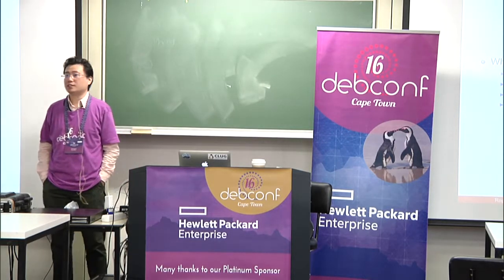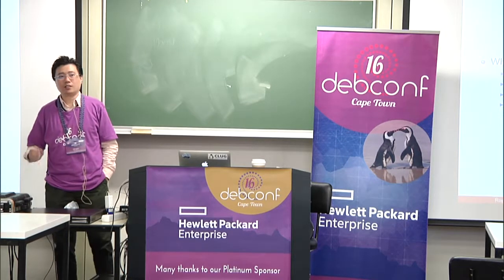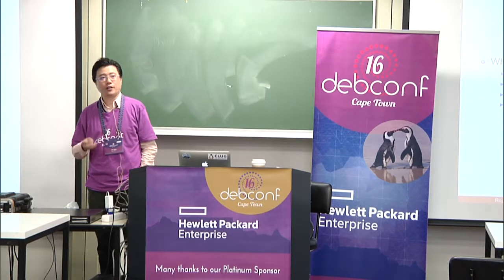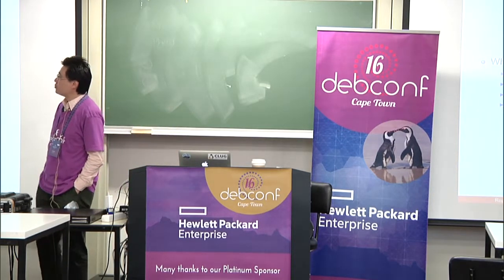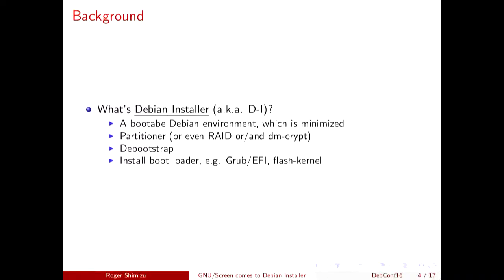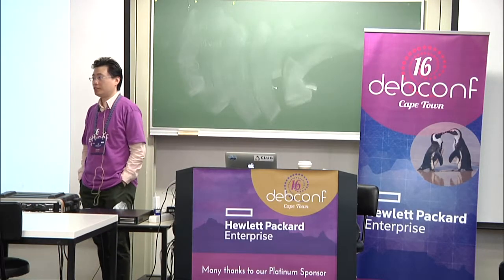There is a partitioner inside the installer so you can do partitioning and create a new disk image. After that we can do the bootstrap to install the Debian environment. Finally, the installer will install the bootloader — there are all kinds of bootloaders such as GRUB for PC, or for ARM64, and for ARM platforms like ARMEL or ARMHF we use flash-kernel as the bootloader.